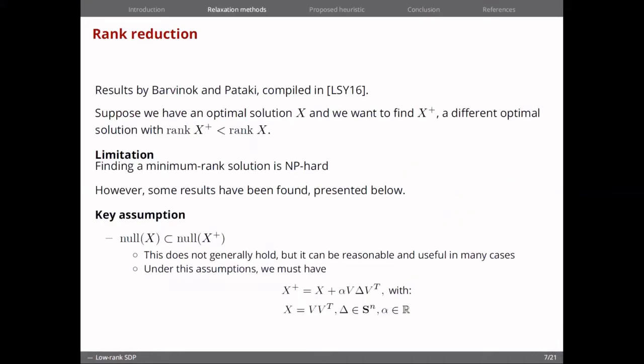We present here the results by these authors that we're citing. The idea is to start from a solution, an optimal solution X with high rank, and find X plus, a different optimal solution with lower rank. Let us start by saying that there's a limitation to this approach and that finding a minimum rank solution in general is known to be NP-hard.